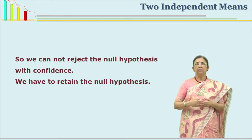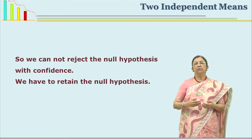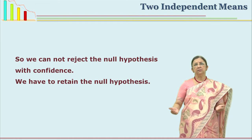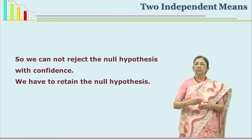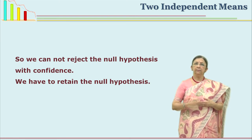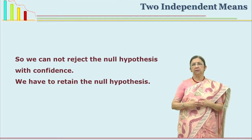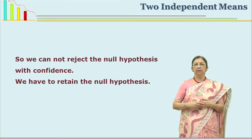We may have got this result because of many reasons and have to explore that. We may conduct the experiment again or enlarge the size of the sample. Many things can be done. But at this point of time we cannot reject the null hypothesis; we have to retain it.